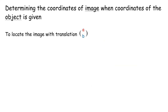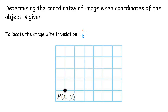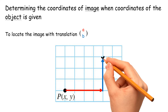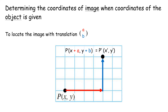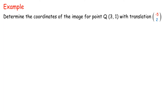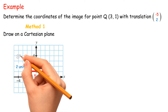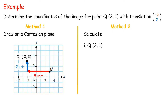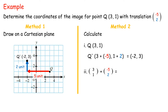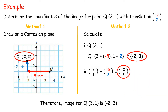Determining the coordinates of the image when coordinates of the object are given. To locate the image with translation (A, B), the coordinates of object P(x, y) will be mapped to image P'(x + A, y + B). Example: Determine the coordinates of the image for point Q(3, 1) with translation. Method 1: Draw on a Cartesian plane — Q moves five units to the left and two units upwards. Method 2: Calculate — object Q(3, 1) becomes image Q'(3 + (-5), 1 + 2) = (-2, 3). Therefore, image for Q(3, 1) is (-2, 3).